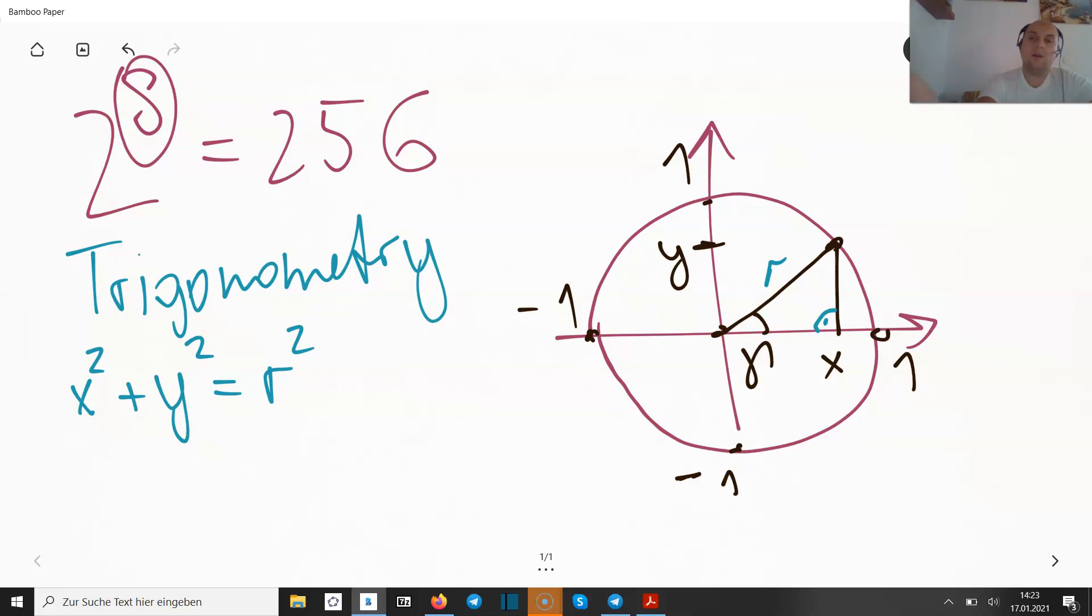So the quotient between the opposite side length, like in this case, it's Y over the longest. So Y divided by R is just being defined as the sign of gamma. And at the same time, the other quotient, so the adjacent, considering the angle divided by the longest, so X divided by R is the cosine of gamma. All right.